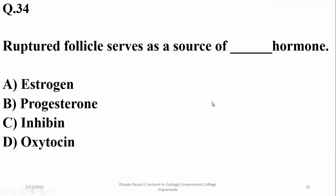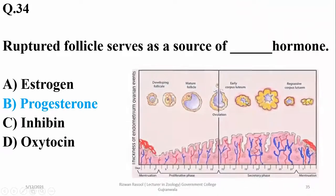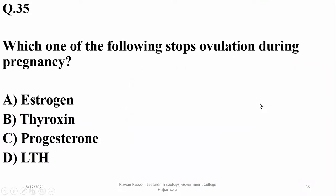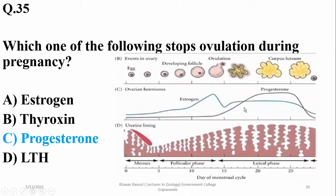Question number thirty-four: the ruptured follicle serves as a source of progesterone. The ruptured follicle is also known as the corpus luteum. Question number thirty-five: which of the following stops ovulation during pregnancy? It's progesterone, because high levels of progesterone stop ovulation and also suppress the release of FSH, as high progesterone exerts a negative feedback effect on FSH as well as LH. Thank you, that was all about the reproductive system and important questions.